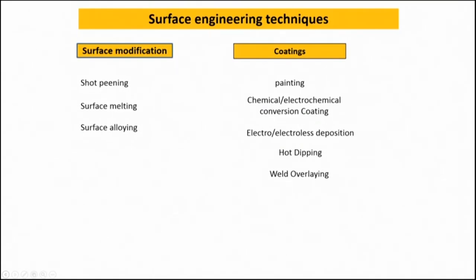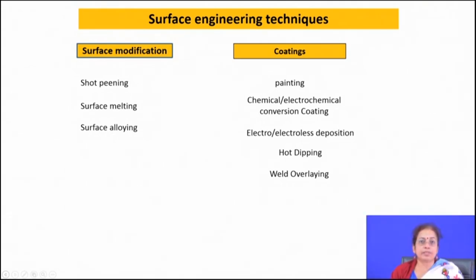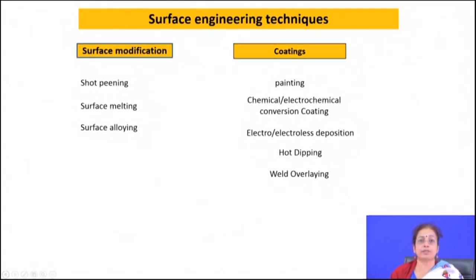Different techniques available for corrosion protection may be categorized into two types: surface modification and coating. Surface engineering techniques are tools applied to change or tailor the surface. Surface modification techniques include shot peening, surface melting, and surface alloying. Shot peening introduces compressive stresses in the component and can be applied for mitigation of stress corrosion cracking and corrosion fatigue.